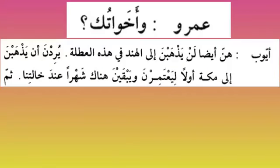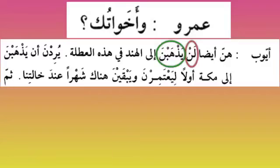Amr asks: what about your sisters? Are they not going? Ayyub says: 'hunna aydan' — when it comes to sisters it is 'hunna' feminine — they also 'lan yadh-habna'. Because 'lan' — this is mabani — 'yadh-habna' will remain 'yadh-habna'. They also are not going to India in these holidays. 'Yuridhna an yadh-habna' — they want to go — 'yuridhna' is fi'l mudari mabani 'ala fatha fi mahali raf'in, and 'yadh-habna' is fi'l mudari mabani fi mahali nasbin, because after 'an' it is mansoob.